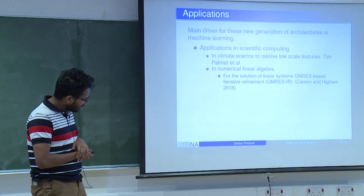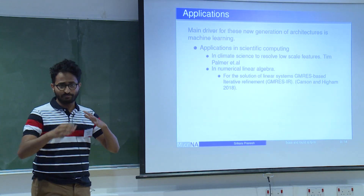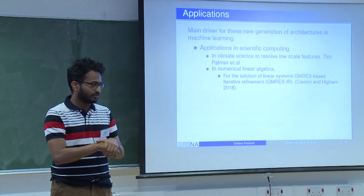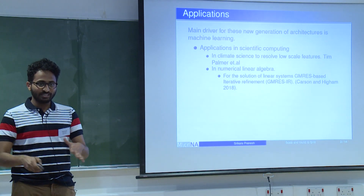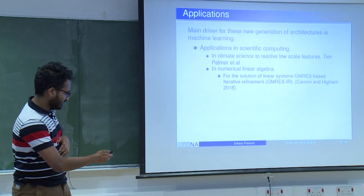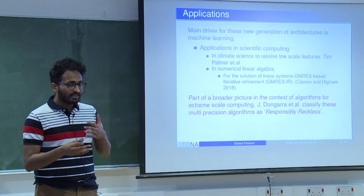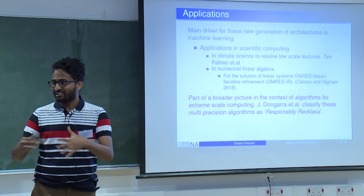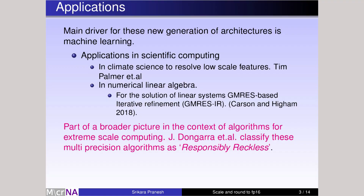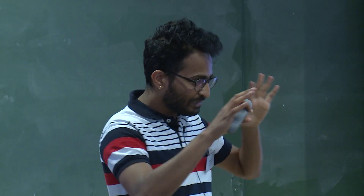The basic idea of GMRES-based iterative refinement is: compute the initial LU factors of your given matrix in half precision, compute the initial approximation of the solution using those half-precision LU factors, then use them as preconditioners and refine your solution using GMRES. You are using multiple precisions here. This whole idea of multi-precision algorithms forms part of a much larger picture — using unconventional methods to obtain huge speedups without compromising accuracy or stability. Jack and his group very nicely call these "responsibly reckless algorithms."